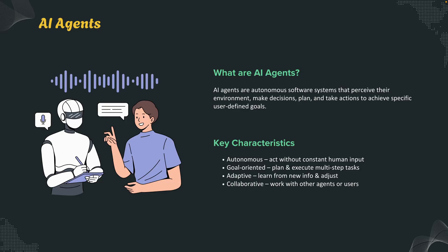Unlike traditional generative AI chatbots that just respond to messages, agents can plan multi-step tasks and execute real actions for you — whether it's fetching data, generating code, or sending an email. They are autonomous, goal-driven and adaptive, meaning they don't just follow your orders; they figure out how to get things done on their own.